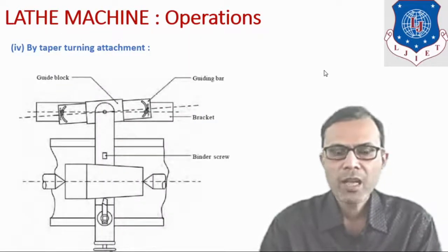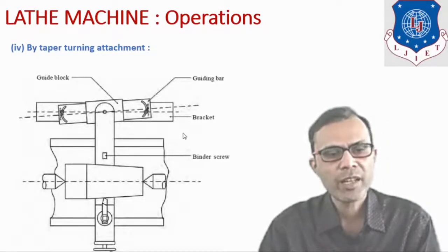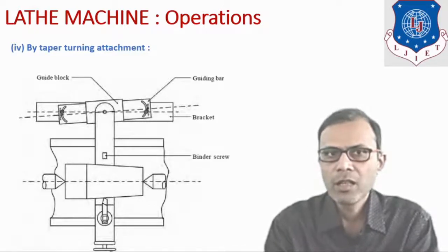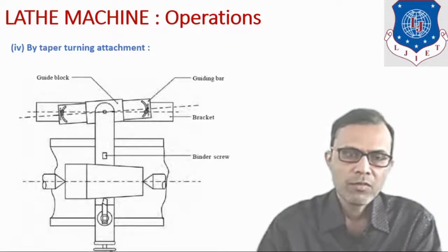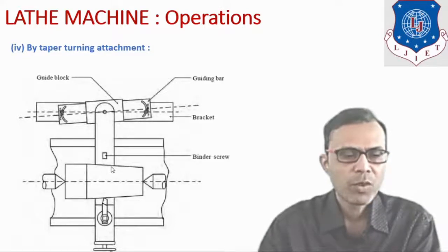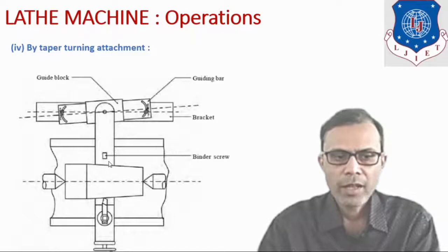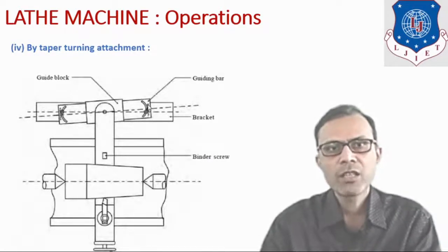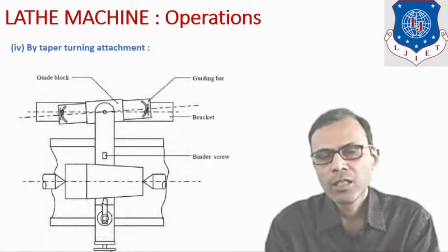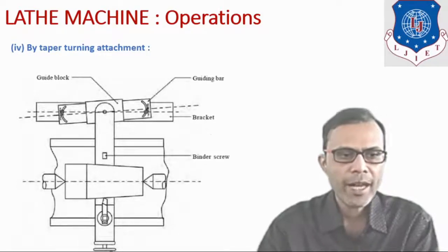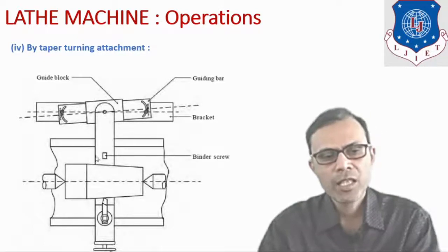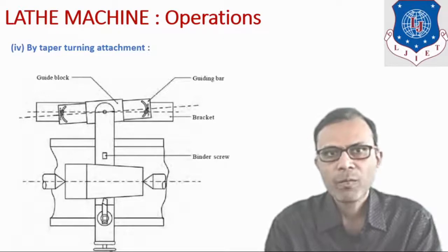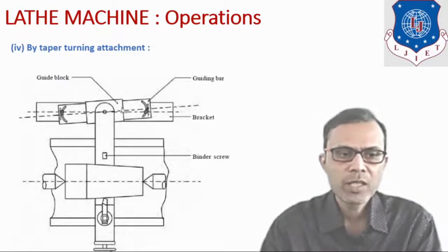The next method is the taper turning attachment. This method is useful when the length of the workpiece is more and when we want to produce a steeper taper angle on a large workpiece. In this method, the cross slide is made free from the carriage assembly by operating the binder screw, and it is then attached to a bracket at the rear end of the machine tool. On that bracket there is a guiding bar that can be swiveled — 10 to 12 degrees of swiveling is possible. A guide block is directly attached with the cross slide, so when we give the feeding motion to the cutting tool, it moves at the required angle with the help of this guide block.